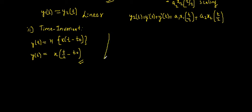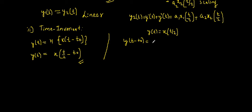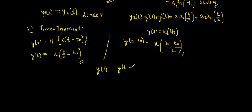For the second half, considering the shift in the output y(t − t₀): starting from y(t) = x(t/2) and replacing every t with (t − t₀), we get y(t − t₀) = x((t − t₀)/2). Comparing the two results, x(t/2 − t₀) ≠ x((t − t₀)/2), so these are not equal. Hence the given system is time variant.